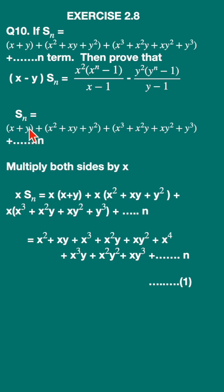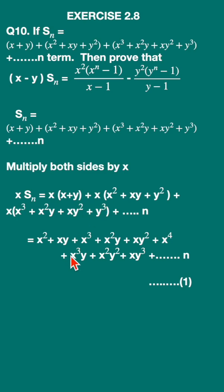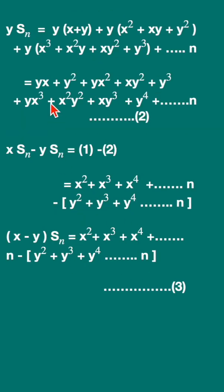Multiply by x: x·S_n equals x into (x + y), plus x into the next expression, plus x into the next — open the brackets and you will get the expanded form. Then similarly compute y·S_n.